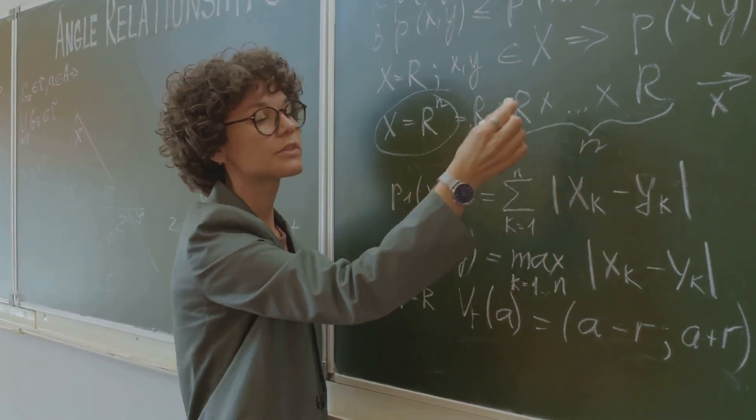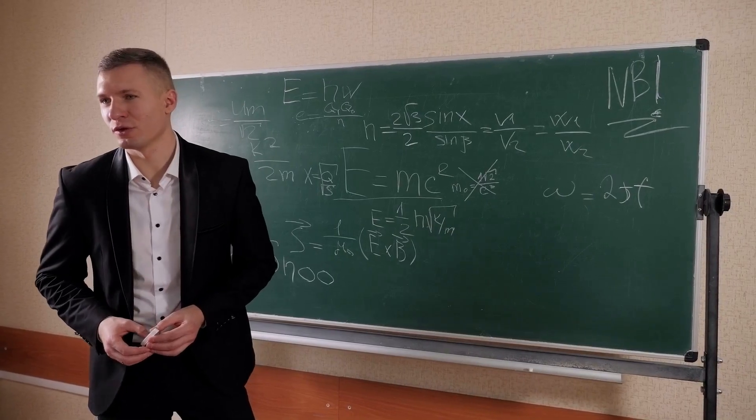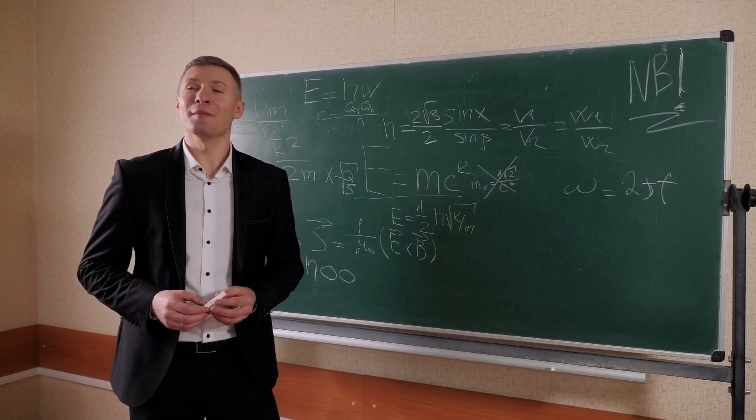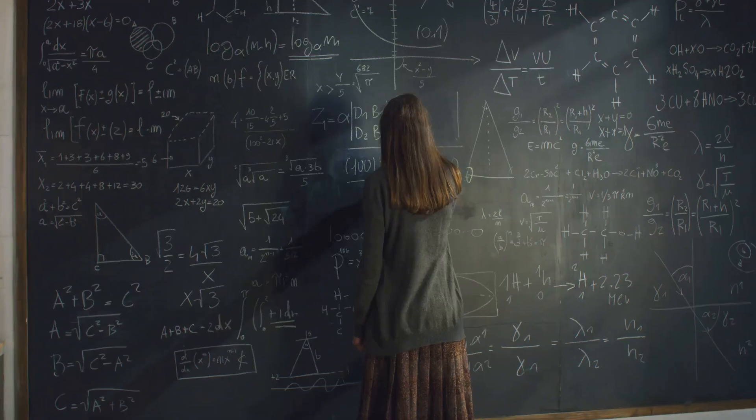A prime number, if you're not familiar, is a number that only has two distinct positive divisors, one and itself. So numbers like three, five, seven, and so on.